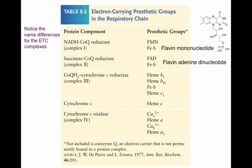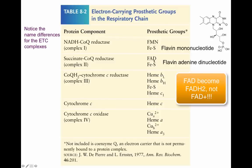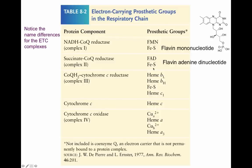That allows Fe³⁺ to become Fe²⁺ when reduced. This table shows the electron carrier complexes and prosthetic groups required for respiration. Every complex involved in the electron transport chain has molecules with prosthetic groups. Complex one has a flavin mononucleotide and iron-sulfur molecules to accept electrons. Complex two — the succinate dehydrogenase — has the FAD molecule that accepts electrons to become FADH, transferring them to an iron-sulfur molecule. In complex three, you have heme BL, heme BH, iron-sulfur molecules, and heme C1.